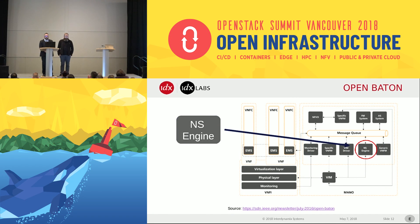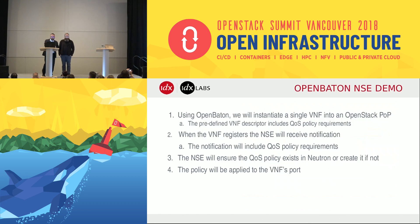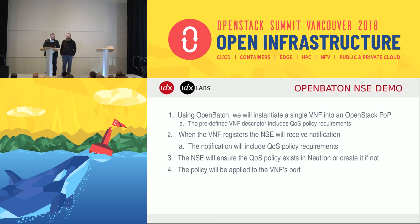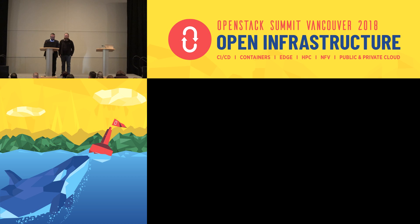Here's a quick diagram of the OpenBaton architecture and where the network slicing engine sits in relation to your VIM and your NFVO. Using OpenBaton, we're going to instantiate a single VNF into the OpenStack PoP. The VNF has a predefined descriptor that includes the QoS policy requirements. The VNF registers with the network slicing engine, receives notification, and the engine ensures the QoS policy exists — creating it if not — and then applies it.